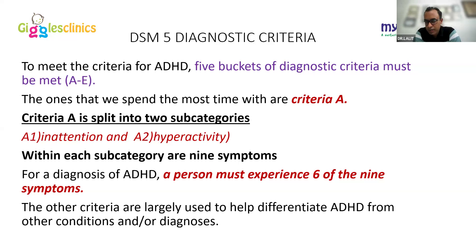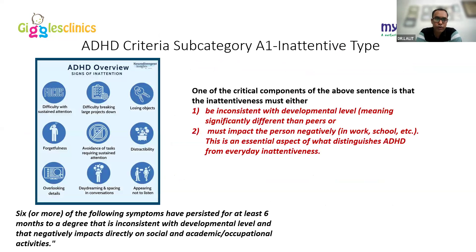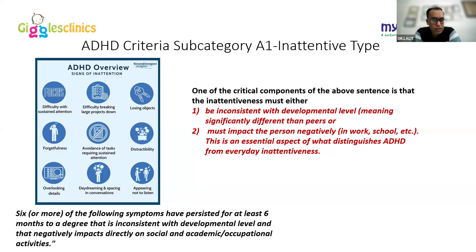Criterion A: Inattention — a critical component is that inattentiveness must be inconsistent with the child's developmental level, meaning it is significantly different from peers. It must impact academic learning or daily routine activities. The nine inattention criteria include: difficulty with sustained attention, difficulty breaking large tasks into smaller ones, frequently losing objects, avoidance of tasks requiring sustained attention, continuous distractions, overlooking details, hyper-focus on areas of interest, daydreaming, and appearing not to listen.